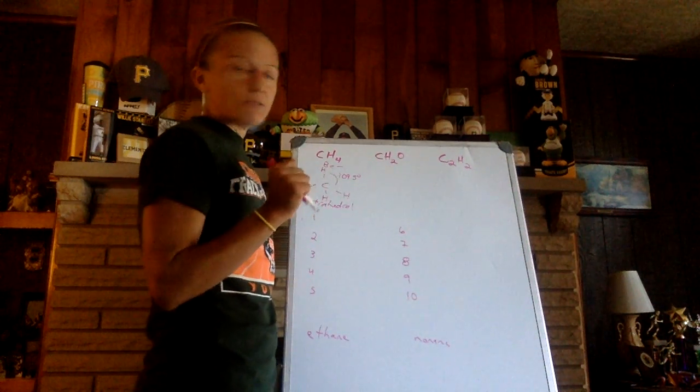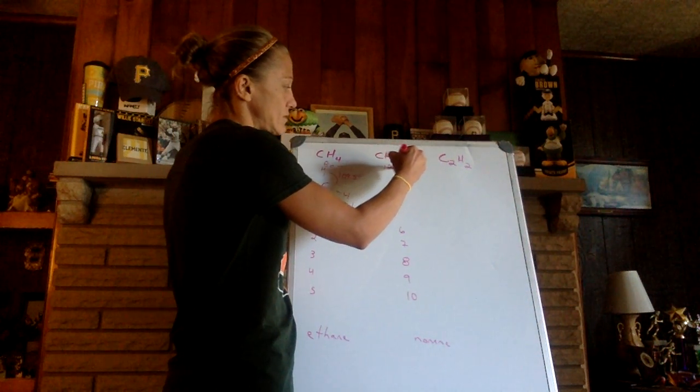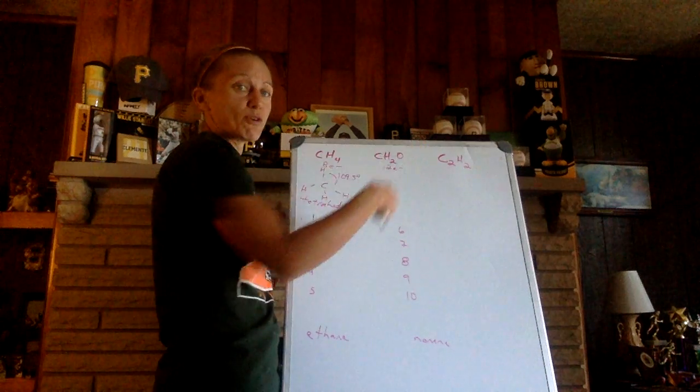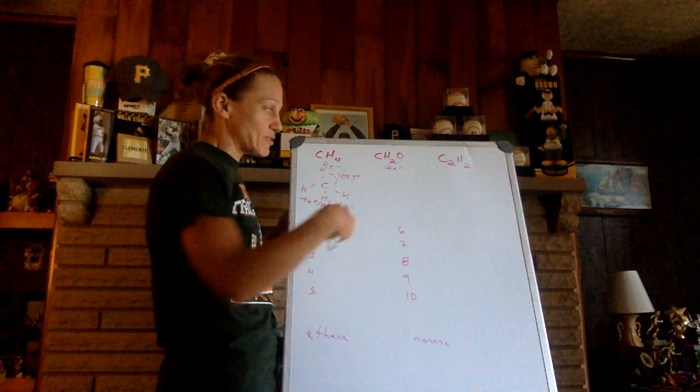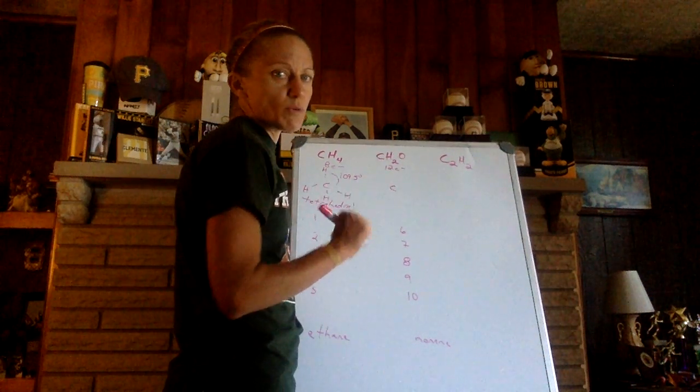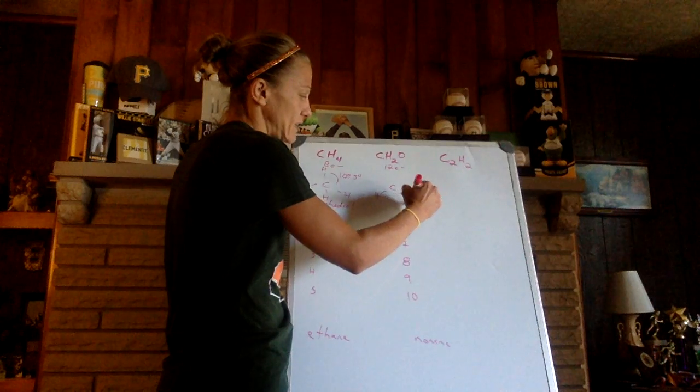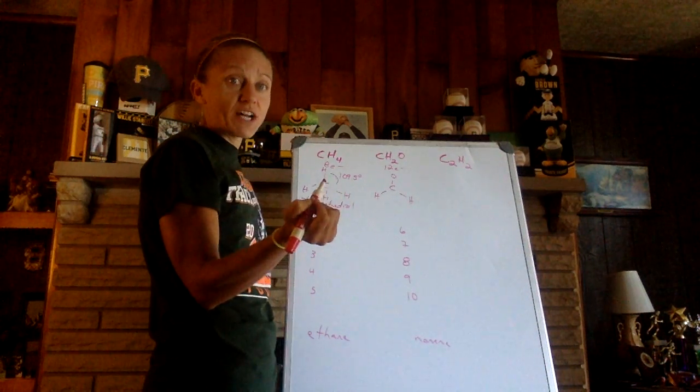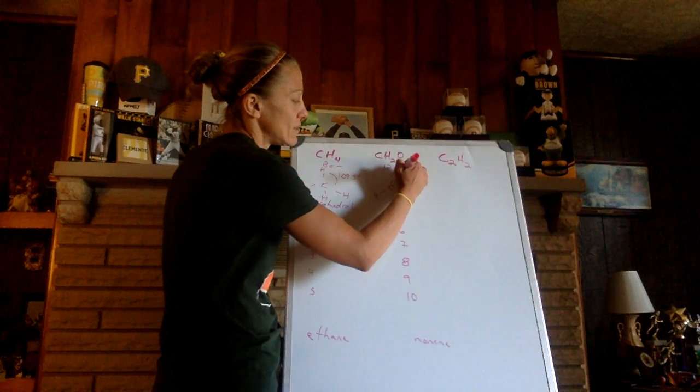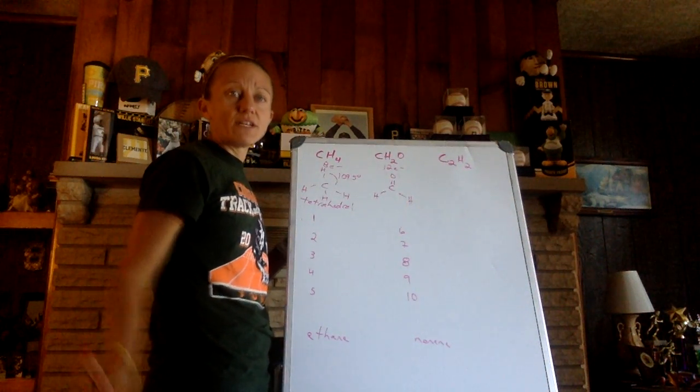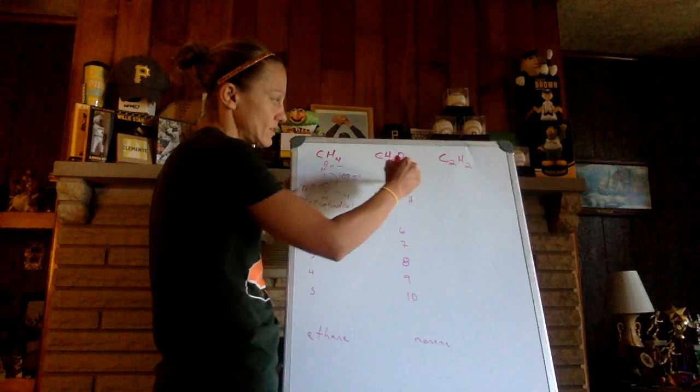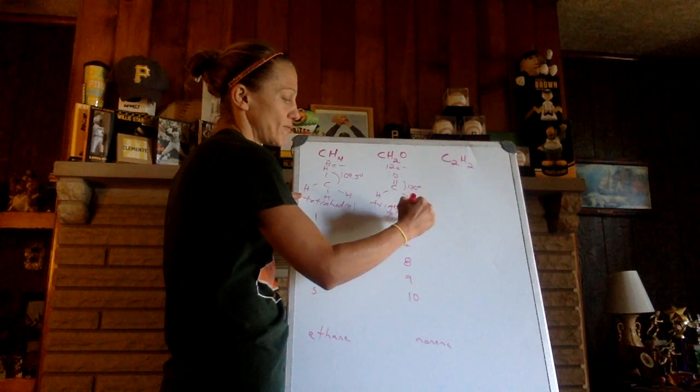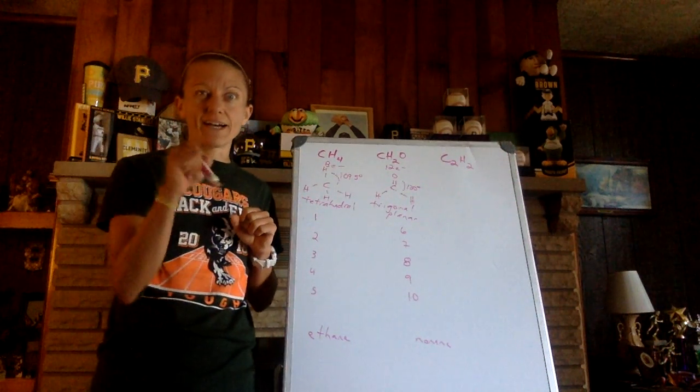CH2O, formaldehyde. Twelve electrons - four from carbon, two from hydrogen, six from oxygen. Carbon in the middle, always carbon in the middle. Put everything else around it. Except that's a sad carbon with only one bond. Nice thing about carbon and oxygen is they're able to double bond. There's the use of my 12 electrons. 120 degree bond angle and trigonal planar. Flat triangle.